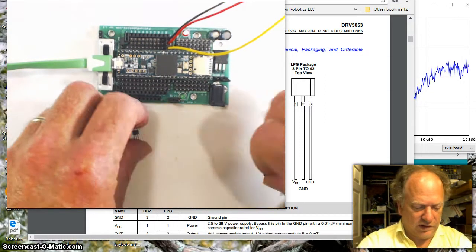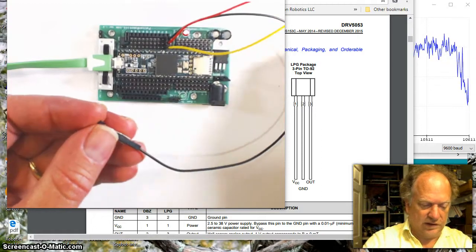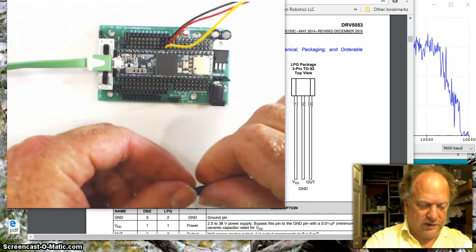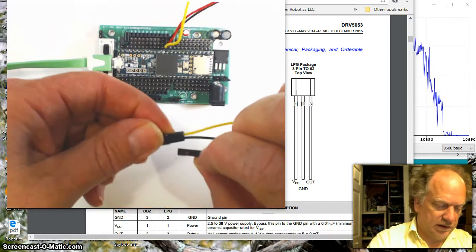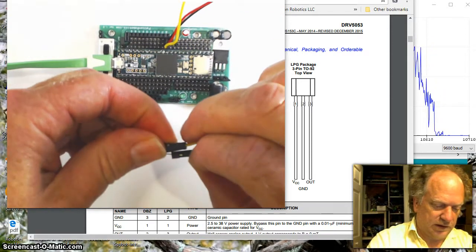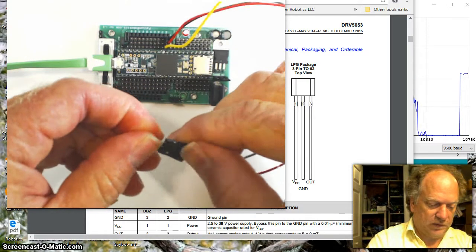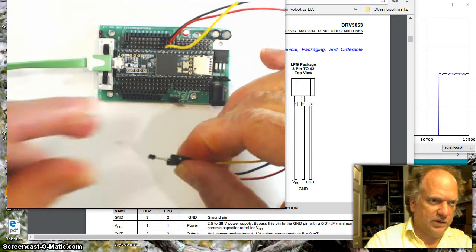So I'm going to go ahead and start off by putting in the ground first, and then I'm going to put in the signal, and then I will put in the voltage. It's hard to do underneath the camera as usual. There we go. I'm going to plug in like that. So I've got voltage, I've got ground, I've got signal.